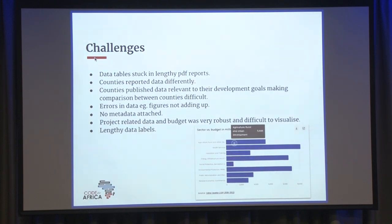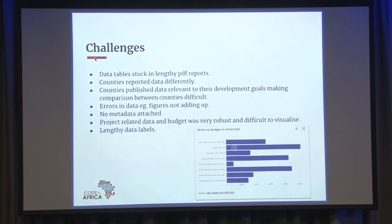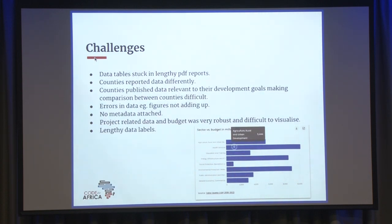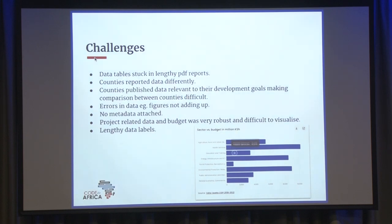There was also no metadata attached, so if data came from an agriculture department, we had to go to that department, find their reports, and identify abbreviations to understand what they meant. Project-related and budget data was also very robust to visualize because you are planning for five years with specific projects along the way — we had to brainstorm for hours on how to best visualize it. Then there were lengthy data labels: government departments and project titles would be something like 'building of X, Y, and Z road in such-and-such city,' making it very difficult to plot on a visualization.